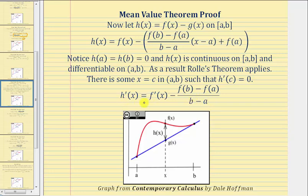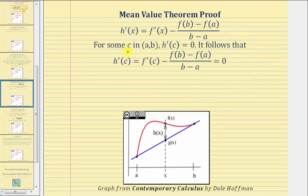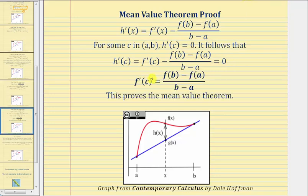So now we have h prime of x equals f prime of x minus the slope of the secant line. From Rolle's theorem we know there's some value c in the open interval from a to b where h prime of c equals zero. Therefore h prime of c equals f prime of c minus this quotient, which equals zero for some value of c. Adding this quotient to both sides, we get that f prime of c equals the quantity f of b minus f of a divided by the quantity b minus a. And this proves the mean value theorem.